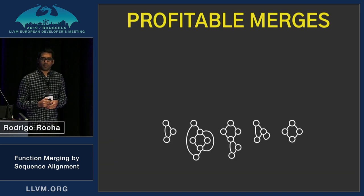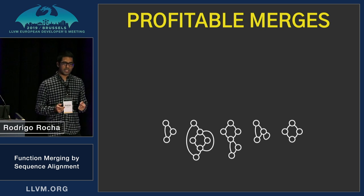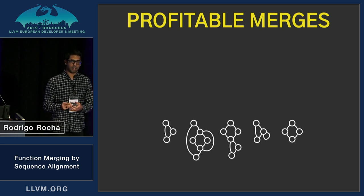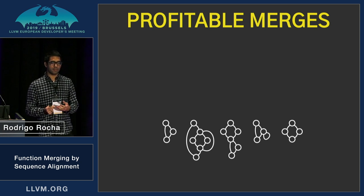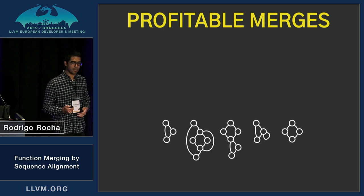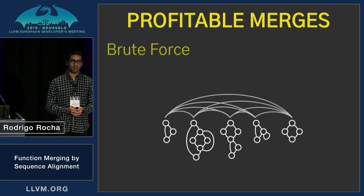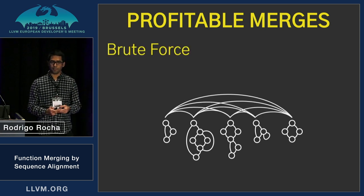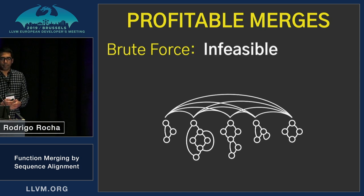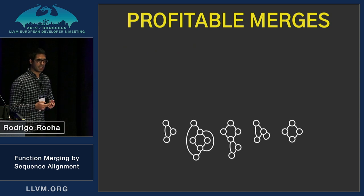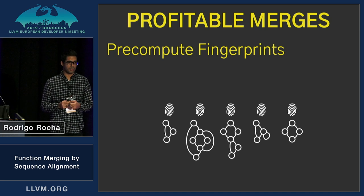Now that we have seen the merge operation, we need to decide when to merge. Because now that we have this very general technique, it may not always be profitable in terms of reducing code size. One approach would be to test all possible pairs of functions, but this would clearly be infeasible, especially because the merge operation can be quite expensive. So we came up with a clever way for selecting which pairs of functions to use.